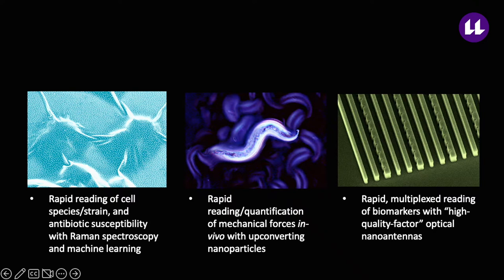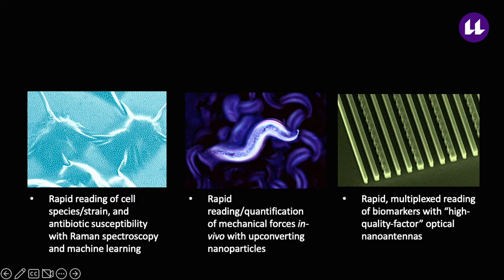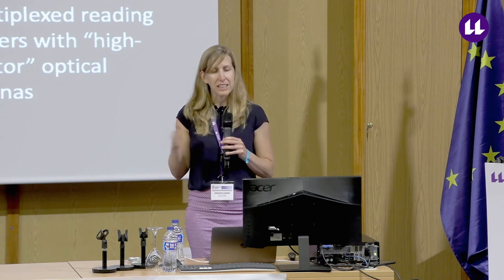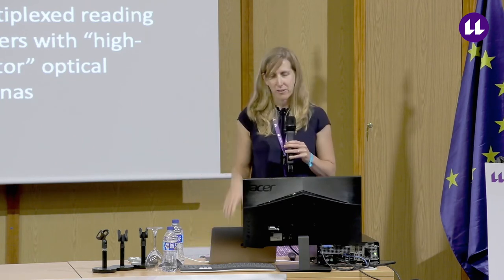What I hope to share with you this afternoon is three vignettes on how we're trying to expedite reading biological data from the cellular level to the molecular level. In the first vignette, I'll share how we can use light and spectral shaping to rapidly identify pathogen cell species and strains and their drug susceptibility. In the second, I'll share nanoparticles that detect forces in biological systems, reading out forces inside C. elegans worms using lanthanide nanoparticles. Finally, I'll show how we can rapidly read out DNA, proteins, and metabolites using high-quality factor metasurfaces.